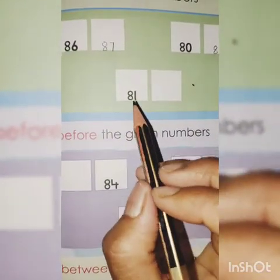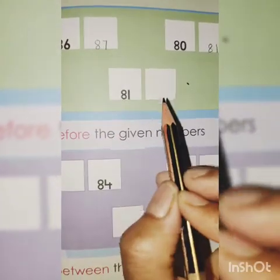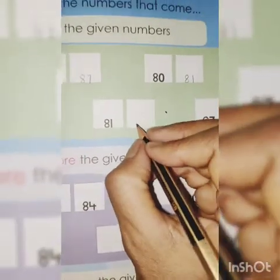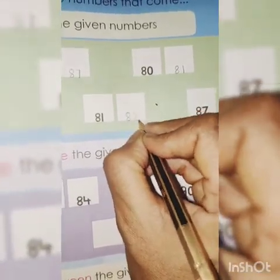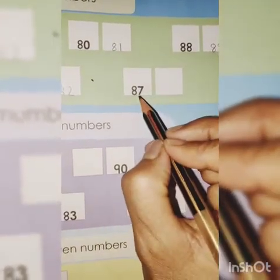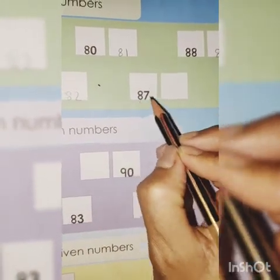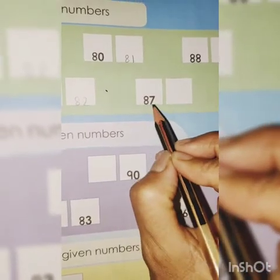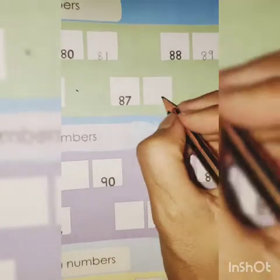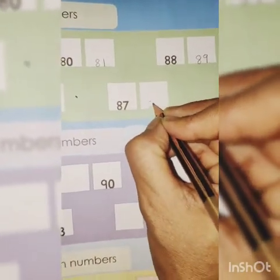Start counting from 81: 81, 82. What comes after 87? Count: 85, 86, 87. Yes, 88.